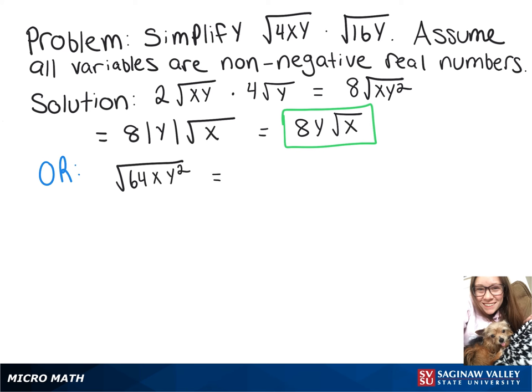And now the square root of 64 is 8, so we can take that out from underneath the radical. We can't simplify x any further, but we can take the square root of y squared, giving us the absolute value of y. And again, we know that y is non-negative, so we can write this as 8 times y times the square root of x.